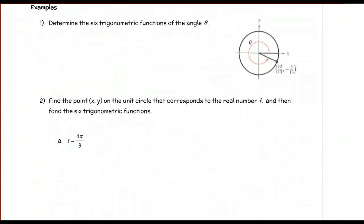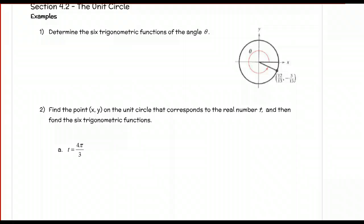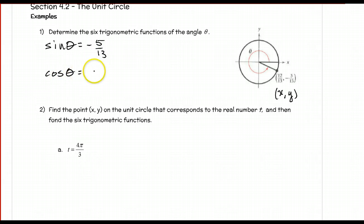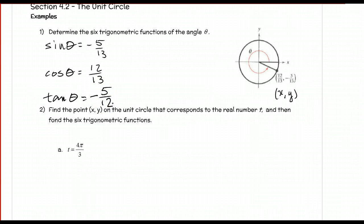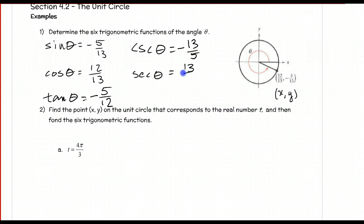Moving on to the examples: we want to determine the six trigonometric functions for angle theta. The x value is the cosine and the y value is the sine. So sine of theta is negative 5 over 13, and cosine of theta is 12 over 13 — we're in the fourth quadrant, so x is positive and y is negative. Tangent of theta is sine over cosine, so negative 5 over 12. The reciprocals give us: cosecant of theta = negative 13 over 5, secant of theta = 13 over 12, and cotangent of theta = negative 12 over 5.